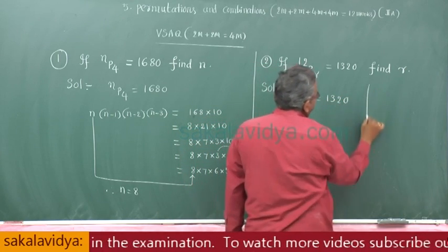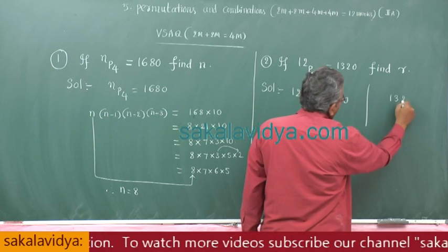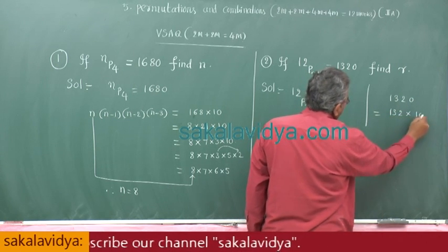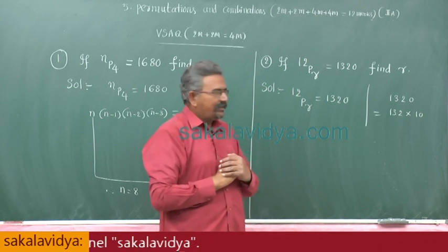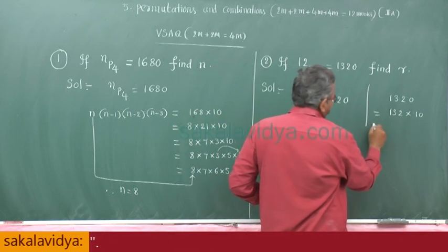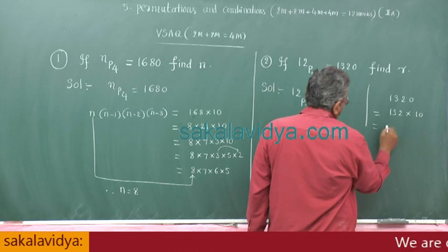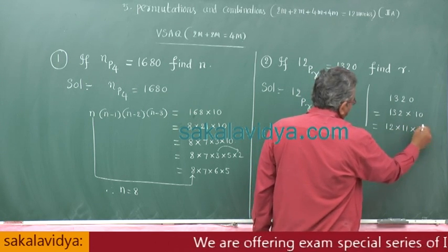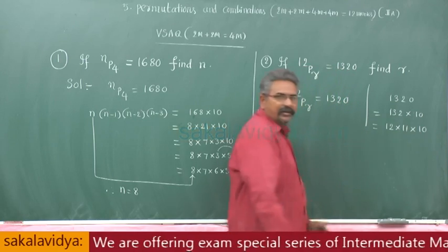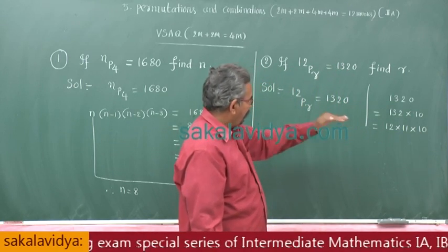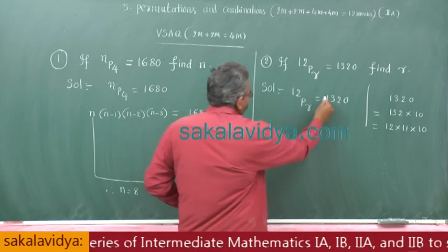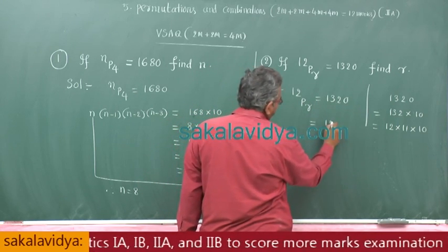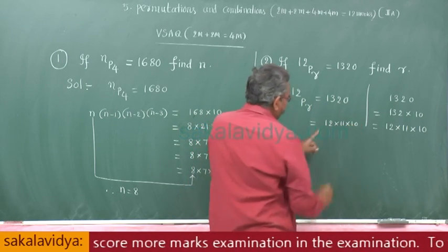Let us think about 1320. This 1320 can be written 132 into 10. First let us factorize like this. Let us try: this is 12 into 11 into 10. This is ok, 12 into 11 into 10. That means this 12Pr, again we can write 12Pr, again we can write 12 into 11 into 10.